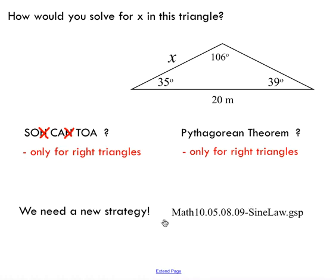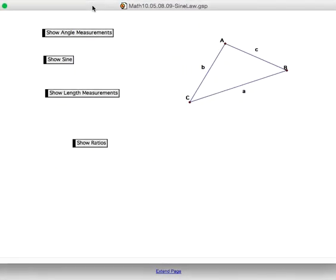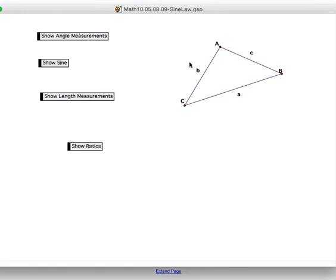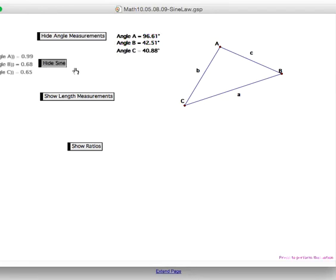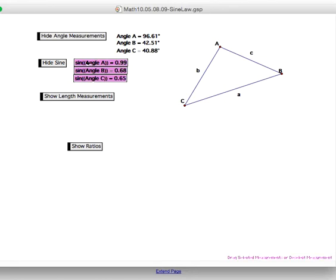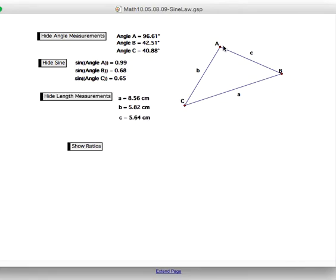So I'm going to show you a quick demonstration using this program called Geometer Sketchpad. What I've got is just a non-right triangle here. So these are my angle measurements. You can see I've got them in purple. So 96-ish, 42, approximately 41 degrees. I'm going to show you the sine of each of those angles. So if I were to just type in the sine of 96.61, I would end up with these values. I'm going to show you the length measurements. I've got just the measurements of each length written out for you.